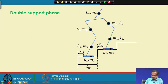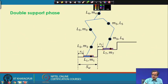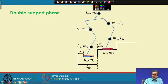During the double support phase, this particular foot is on the ground; similarly, this particular foot is also on the ground, and this is nothing but the staircase. This staircase is denoted here.